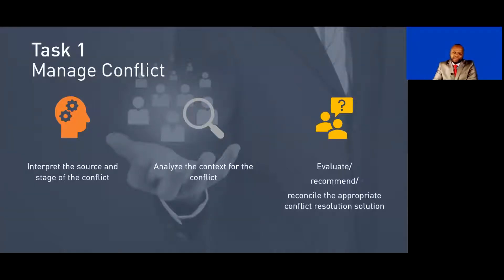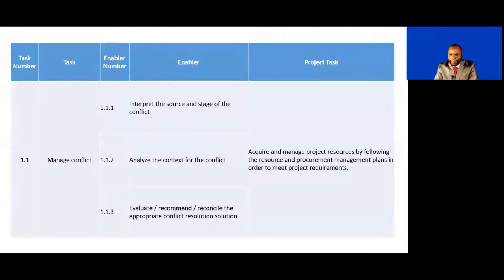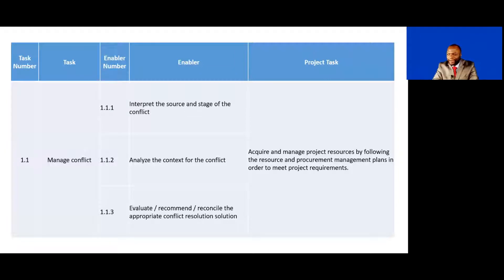When you talk about these three enablers, they're tied to one overarching project task. As you can see on the screen, we have the three enablers: 1.1.1, 1.1.2, and 1.1.3. We are showing you the project task that these are tied to — acquire and manage project resources by following the resource and procurement management plans in order to meet project requirements.